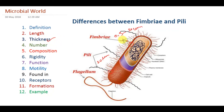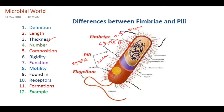Now, coming to their thickness: fimbriae has a diameter of normally 65 to 135 angstroms. For pili, it is really more — starting from 250 angstroms — and it actually varies based on the type of pili.